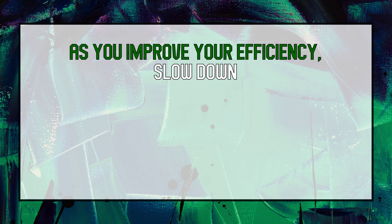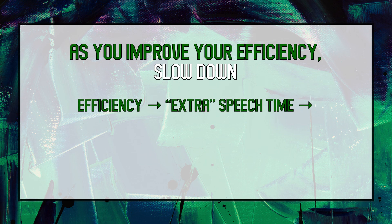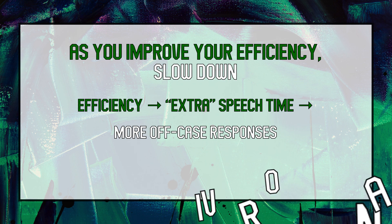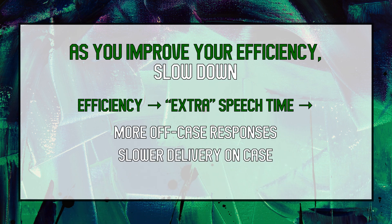As you improve your efficiency, you'll need less time than before to answer the same set of case arguments. Some of that extra time should be reallocated to off-case positions, but some of it needs to be reinvested into the case — take some of that extra time and use it to slow down on the case. I know this can seem like terrible advice. Isn't the whole point of becoming more efficient to make more arguments? But remember that efficiency is really about effectiveness. 2AC case arguments are extremely challenging for judges to flow, so slowing down will help your judges understand and flow more of what you're saying. There is an enormous difference between hearing the 2NC try to take apart an affirmative case you barely understand and hearing the 2NC try to take apart one you understand well. With more efficiency, slow down on the case.